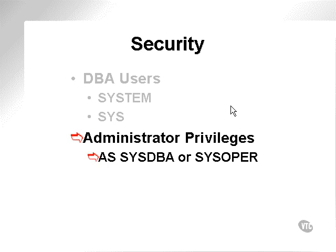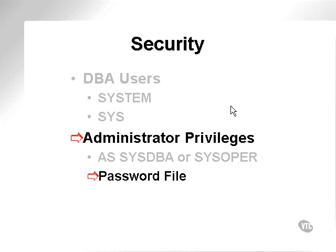What sysDBA and sysOper allow is access to the database whilst it is shut down through a password file. Since the database is not started up, there is no other way to access the database through the password privilege system without using an external file — that is the password file. The password file is stored in the operating system as an encrypted binary file.